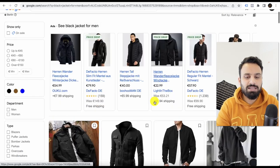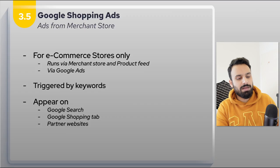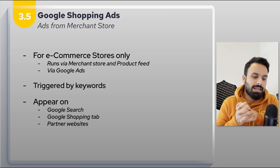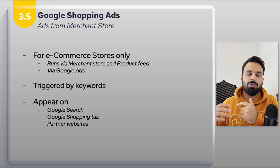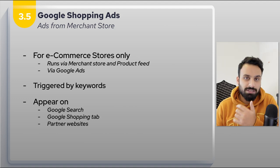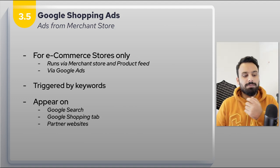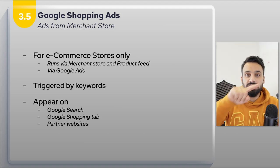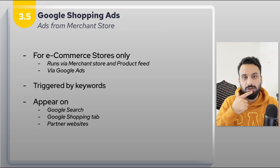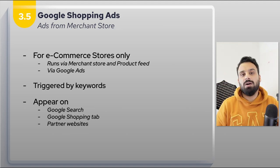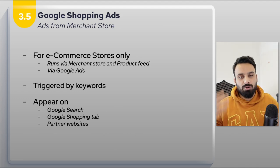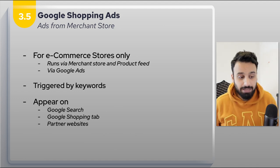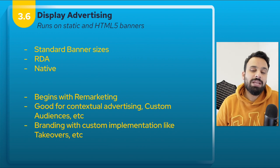Shopping ads can appear on Google Search, the Google Shopping tab, and partner websites. For example, on Google Search when I look for 'black jacket for men', there's a Shopping tab — going there shows the ads section with paid results at the top and organic results below. I'll also provide links in the description for all the websites mentioned, like SEO ranking factors, search trends, and search engine market share data.